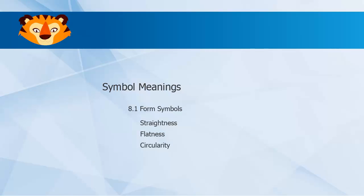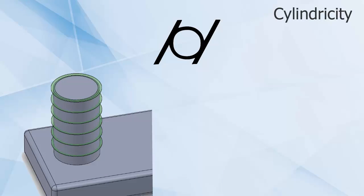The final form control we will address is cylindricity. Similar to moving from straightness to flatness, cylindricity is like circularity carried along an additional dimension.